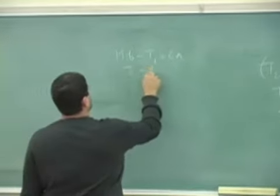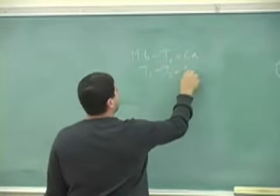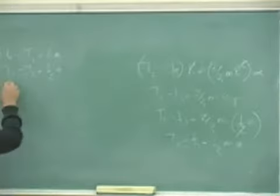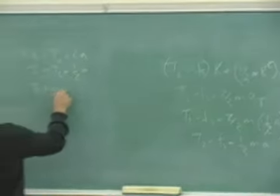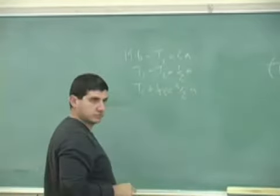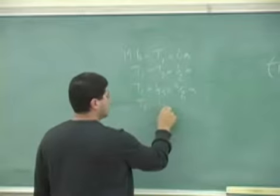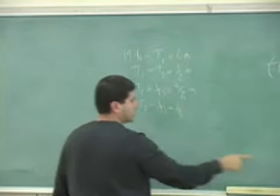1 minus t2 equals half a. And my third equation was t2 plus fs equals 3 halves a. And my fourth equation is t2 minus fs equals 1 third ma.